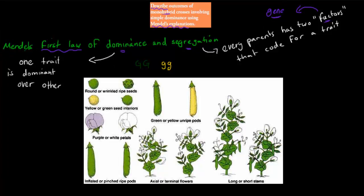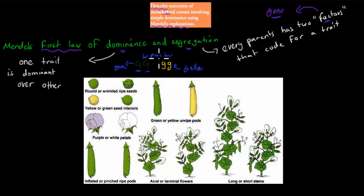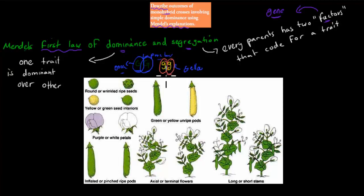For example, capital G stands for green and small g stands for yellow. A purebred green plant has two big Gs - there are two genes coding for this plant to be green. Whereas the other case we've got two small gs, coding for a yellow plant. And if it were a hybrid, a monohybrid, it would have one big G and one small g.